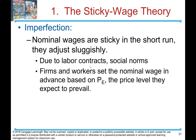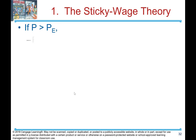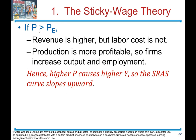The sticky wage theory: the imperfection is that nominal wages are sticky in the short run — they adjust sluggishly due to labor contracts and social norms. Firms and workers set the nominal wage in advance based on expected price level. If the actual price is higher than expected, revenue is higher but labor cost is not, so production is more profitable. Firms increase output and employment. Hence, higher P causes higher output, and the short-run aggregate supply curve slopes upward.